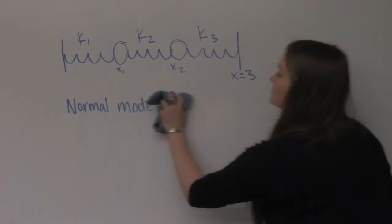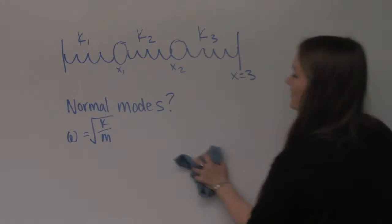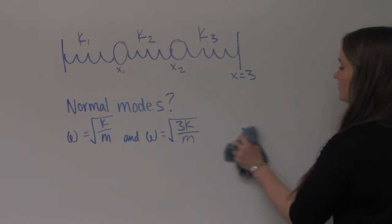The normal modes of this system are at angular frequencies square root of k over m and square root of 3k over m. This is as long as all the spring constants are the same.